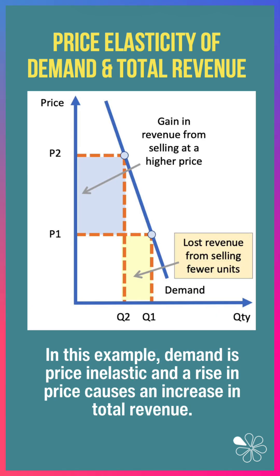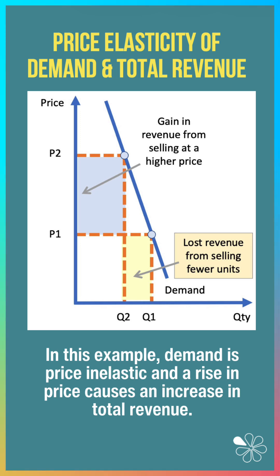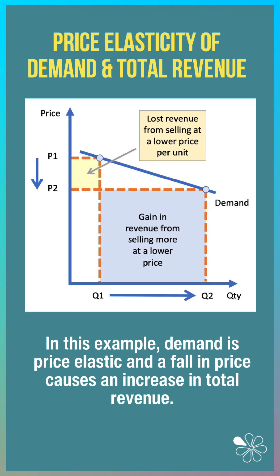So in this example here, demand is price inelastic and an increase in price from P1 to P2 causes an increase in total revenue.